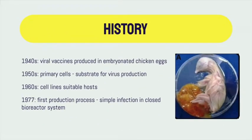Since the 1940s, viral vaccines have been produced in embryonated chicken eggs to replicate viruses, although the production is limited by their availability. Then in the 1950s, primary cells were used as substrates to produce virus, and in the 1960s, continuous cell lines were considered suitable hosts to produce human vaccines. Until 1977, the first production was achieved enabling infection in a closed bioreactor system to ensure sterility.